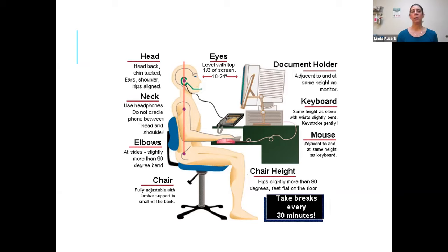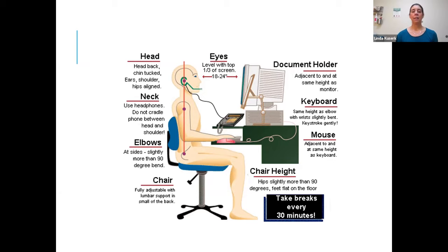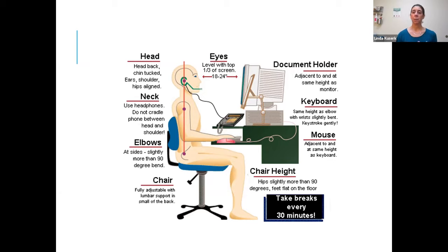If you're on the phone a lot, use Bluetooth or speakerphone rather than holding it with your shoulder. Your elbows should be approximately 90 degrees. The chair is ideally adjustable — at home we're looking for roughly a 90-degree angle at the hips, though this depends on a person's body. If you have tight hips, you may be more comfortable at slightly under 90 degrees. There are many variables depending on a person's body type and structure.